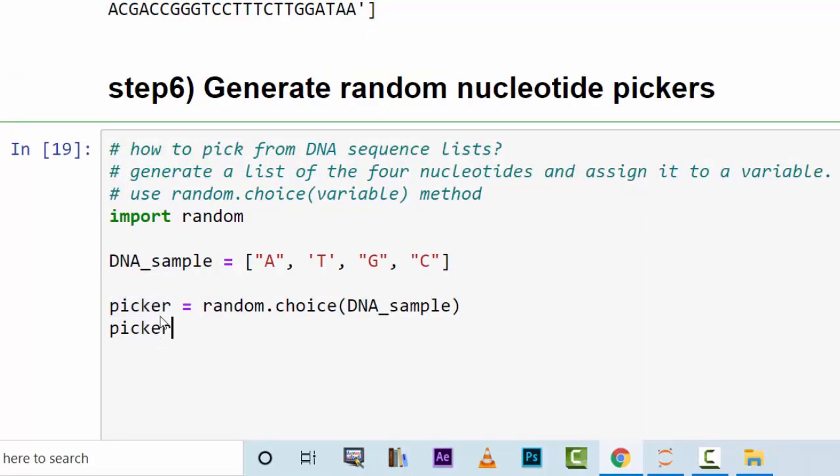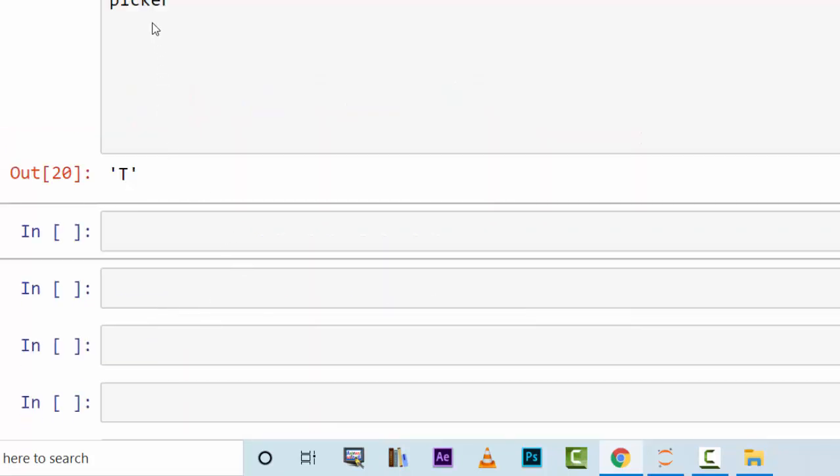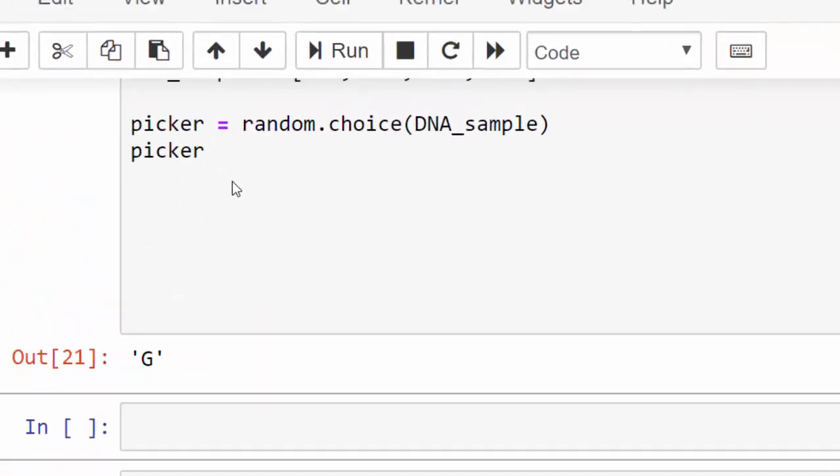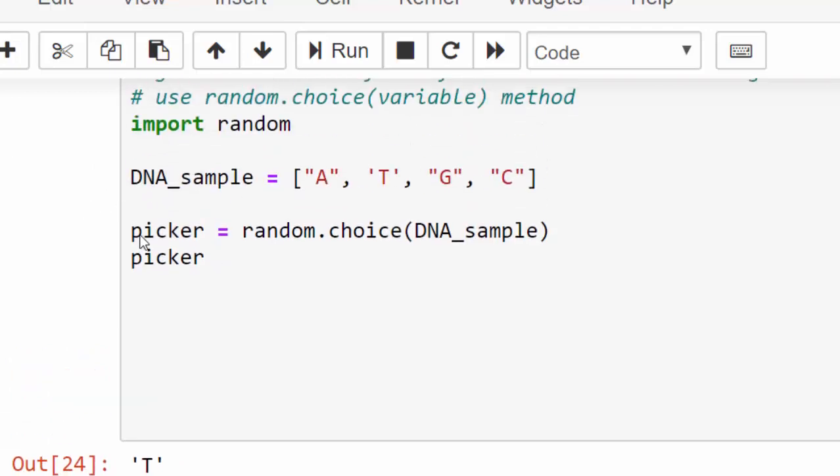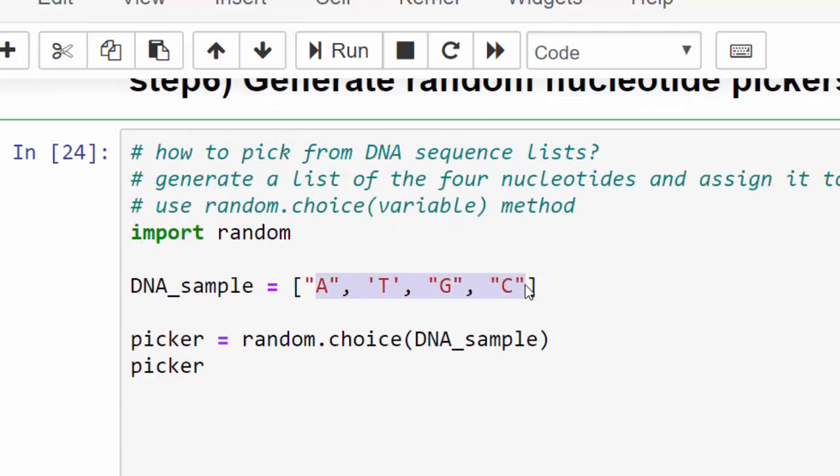Then you could say print out picker. Now it picked t. This time it picked g. You can run it as many times as you please. Each time it randomly chooses one of those four. In the next coming tutorial I'm going to use all of these techniques in order to write a function that tackles the problem of having N nucleotides in your DNA sequence. I hope you enjoyed this lecture and thank you for joining me here.